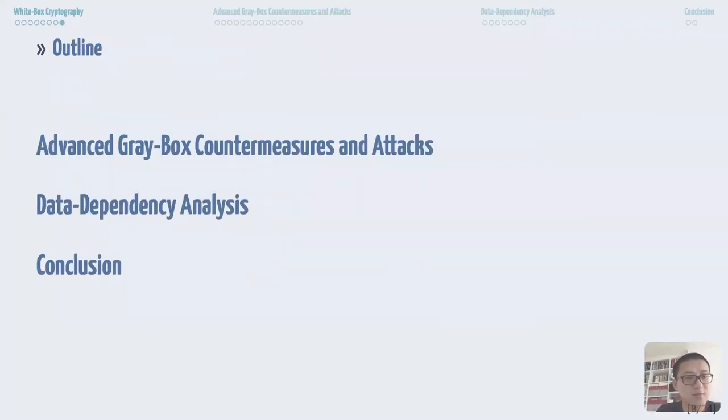Since DCA is a DPA technique used in white box context, it is natural to adopt the DPA countermeasures to protect the white box implementations. In this presentation, I will first talk about advanced white box countermeasures that are used in practical white box implementations as well as the three winning implementations of WhibOx 2019. At the same time, I will present different attacking paths against these countermeasures and analyze the performance in terms of computation complexity. Then I will introduce a new data dependency based attack that substantially improved the attacking complexity. Finally, I will conclude the talk.